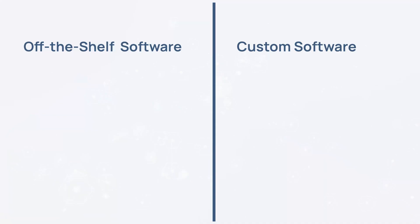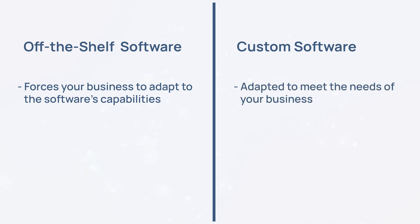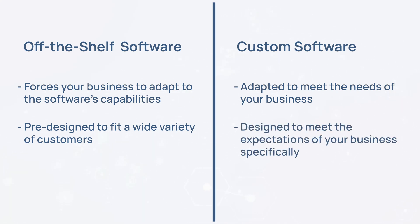When deciding on software for your company, there are two options to pick from: off-the-shelf software and custom software. While off-the-shelf software forces your business to adapt to the software's capabilities, custom software is adapted to meet the needs of your business. Off-the-shelf software is pre-designed to fit a wide variety of customers, however custom software is designed to meet the expectations of your business specifically.